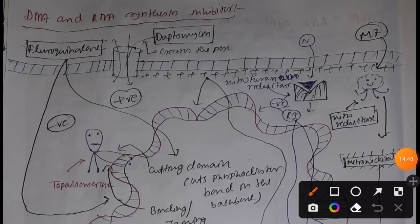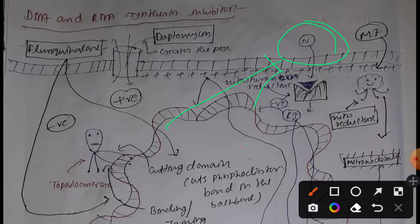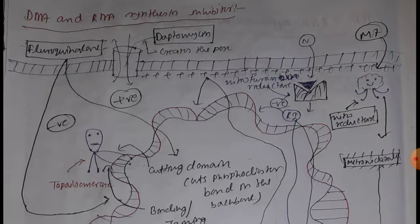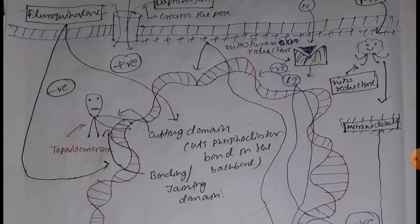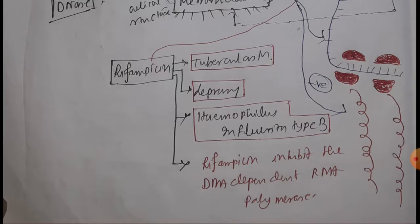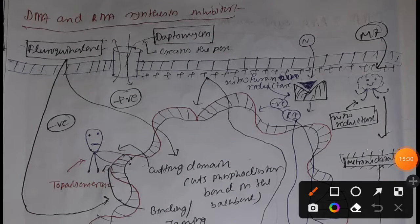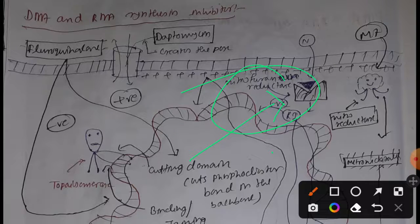Drug number three is nitrofurantoin. Nitrofurantoin binds with nitrofurantoin reductase, an enzyme already present inside the cell. This nitrofurantoin reductase facilitates the conversion of nitrofurantoin into a reactive intermediate, which is similar to reactive oxygen species. This reactive oxygen intermediate negatively affects — or inhibits — DNA synthesis, RNA synthesis, and subsequently protein synthesis. That is the mechanism of nitrofurantoin.